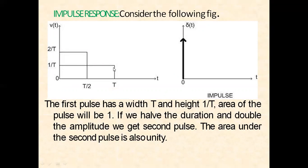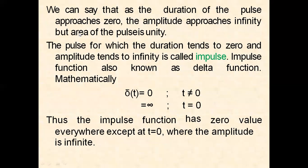The area of this pulse is also unity — 2/T times T/2 equals one. So the area under the pulse remains unity. This is the general figure of an impulse response, denoted by delta(t). As the duration of the pulse approaches zero, the amplitude approaches infinity, but the area of the pulse remains unity. The pulse for which the duration tends to zero and the amplitude tends to infinity is called the impulse function.